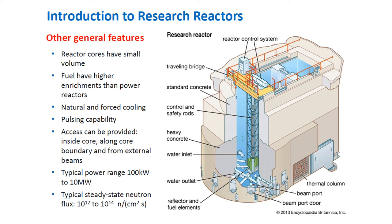Research reactors have cores with smaller volume, typically because the fuel has higher enrichment than power reactors. For low-powered research reactors, natural convection is enough for heat to flow out of the core, but for high-powered research reactors, forced cooling is required. Research reactors also have pulsing capability, wherein you can produce short bursts of energy. Unlike power reactors, research reactors can provide access inside the core, along the core boundary, and from external beams.